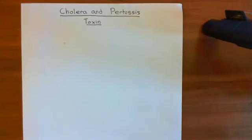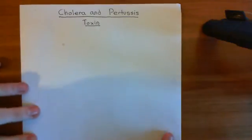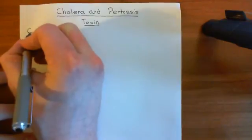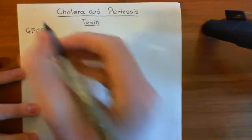Before we can discuss what each of these toxins do, we need to first discuss G-protein coupled receptors, heterotrimeric G-proteins, and the G-protein cycle. So let's start with G-protein coupled receptors, or GPCRs for short.